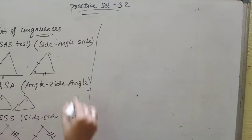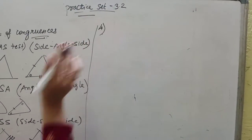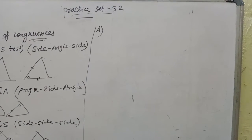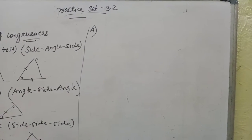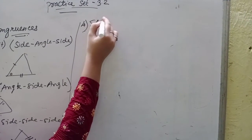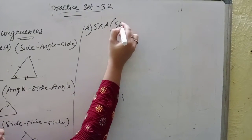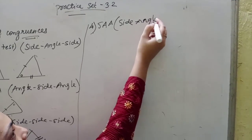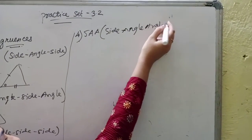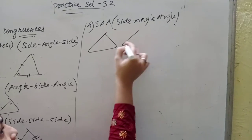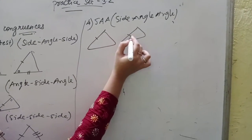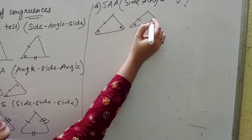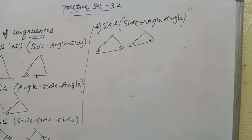The next one is fourth one. Fourth one would be Side-Angle-Angle. This is SAA. Side, Angle, Angle. Means two triangles are given. First side is similar to another, angle is similar to this angle, and this angle is similar to this angle.